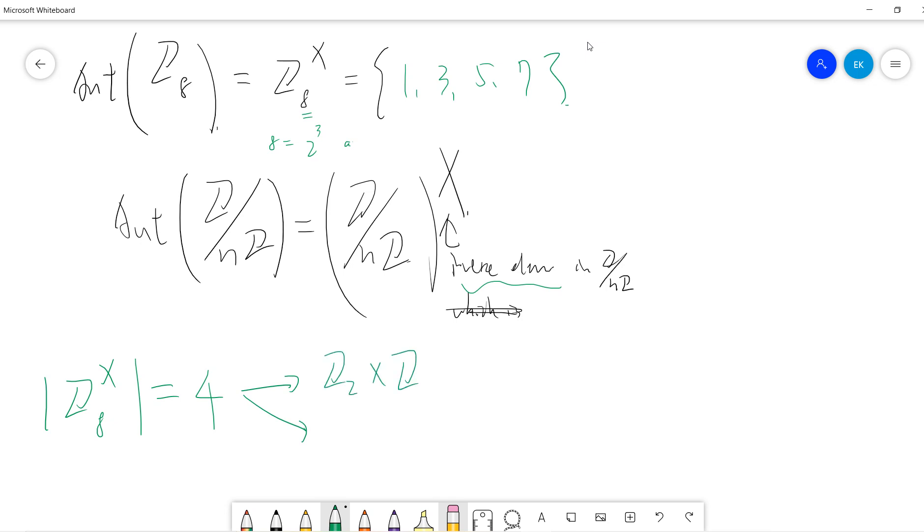First is Z2 cross Z2. People also call it Klein group. And another is Z4.